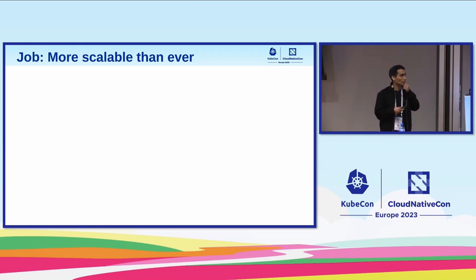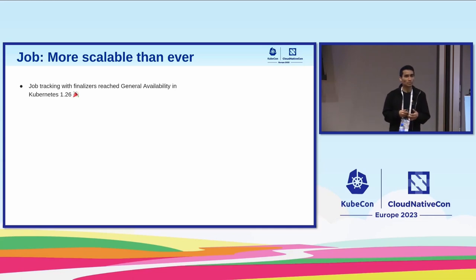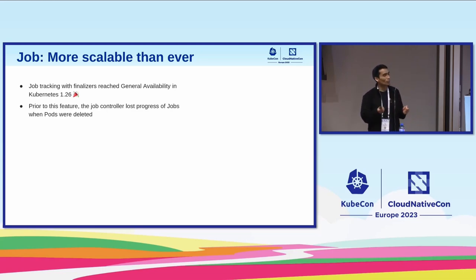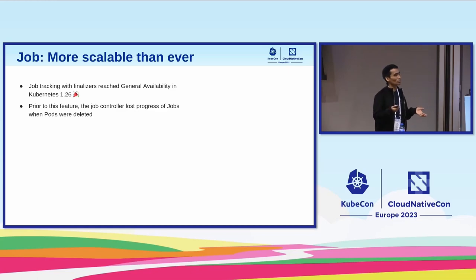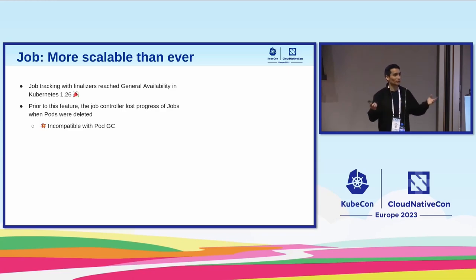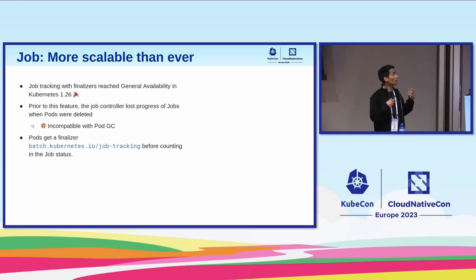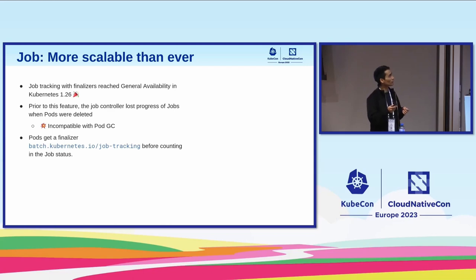The feature I'm most excited for is job tracking with finalizers, which reached general availability in the 1.26 release. Before this feature, the job controller could lose track of the number of completions and failures when pods were deleted — making the job controller incompatible with the pod garbage collector, which is ironic since both are Kubernetes components. The fix was to introduce a finalizer to control when pods are deleted, ensuring they are tracked in job status before deletion.